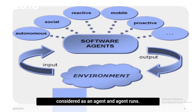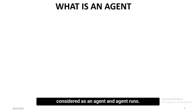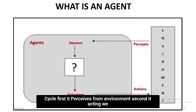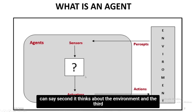An agent runs in a cycle. First, it perceives from the environment. Second, it thinks about the environment. And third, it acts on that environment.